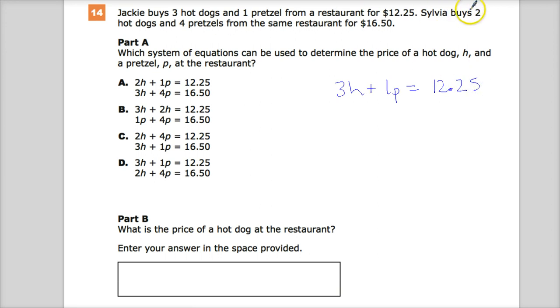Then Sylvia buys two hot dogs, so 2h for her, and four pretzels at $16.50. So that would be D for this one. Now, they want me to find the price of a hot dog.